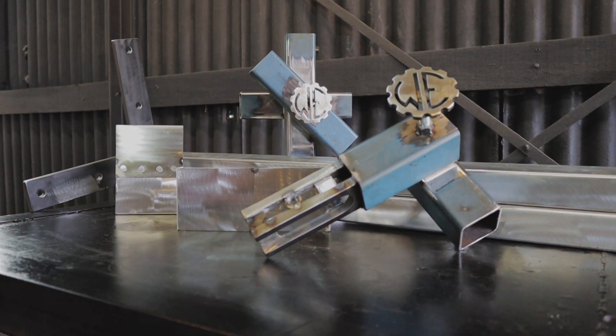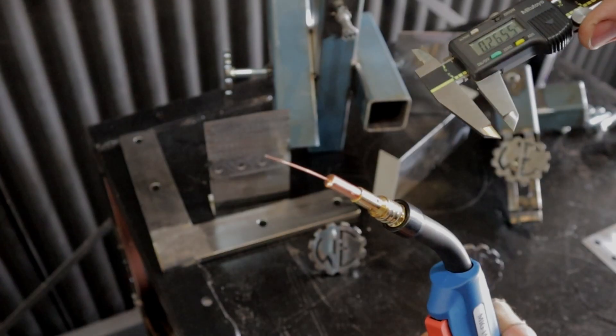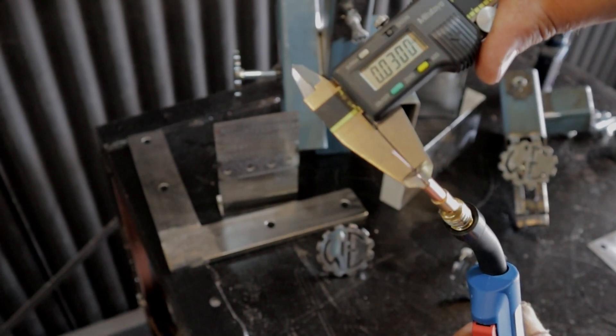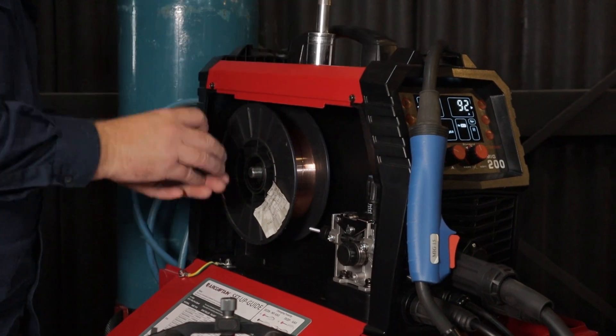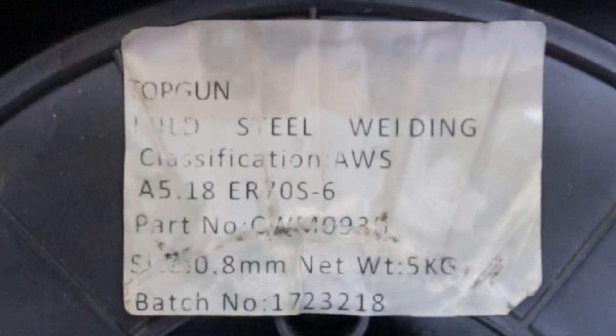For thin gauge steel you have the MIG wire choice of 0.023 or 0.030 which is 0.6 mil or 0.8, typically ER70S-6.